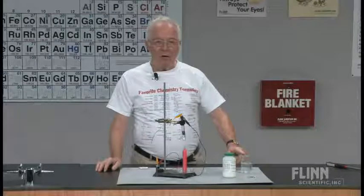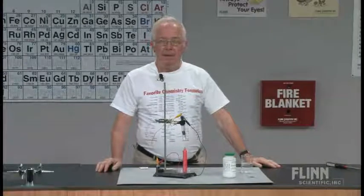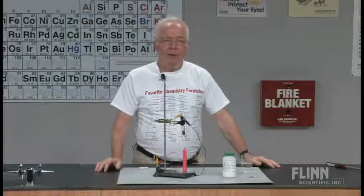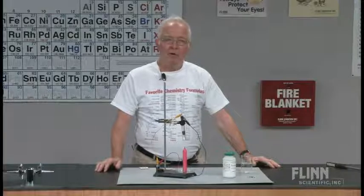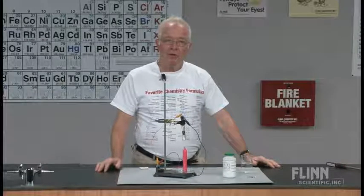When potassium hydroxide pellets are dissolved in water, the potassium hydroxide — potassium ions and hydroxide ions — are each hydrated. They're separated by water. Now, what kind of process is that? It's a formation of ions. But it's only the formation of ions if the ions weren't there to start with. If the ions were there to start with, the process would be called dissociation. And that's what we're going to try and demonstrate today.